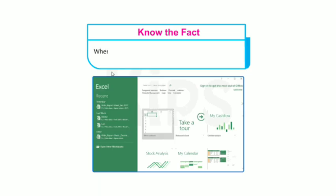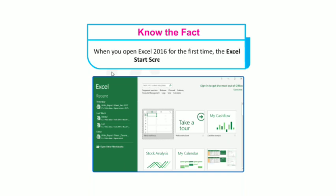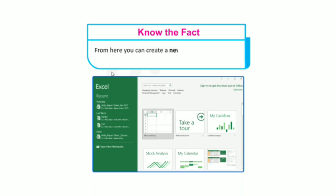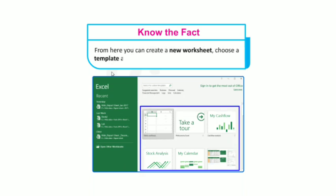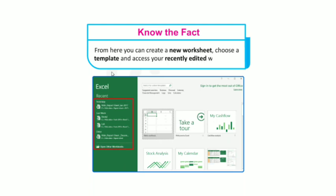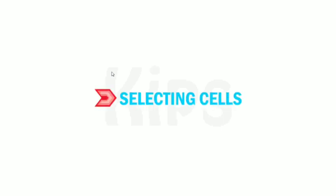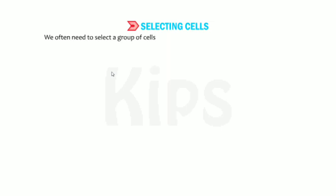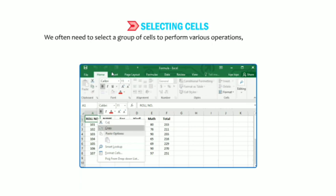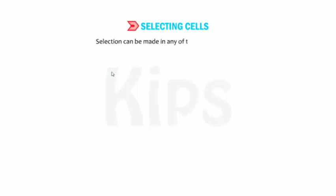When you open Excel 2016 for the first time, the Excel Start Screen will appear. From here you can create a new worksheet, choose a template, and access your recently edited workbooks. Now, first we discuss how to select cells. We often need to select a group of cells to perform various operations such as copying, moving, inserting, or deleting. Selection can be made in any of the following ways.